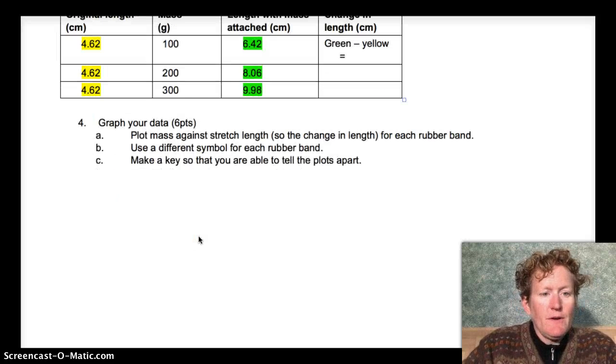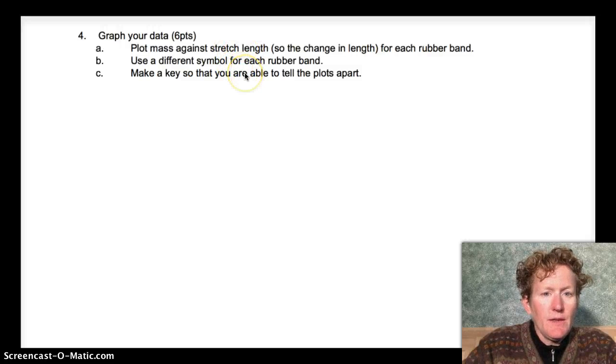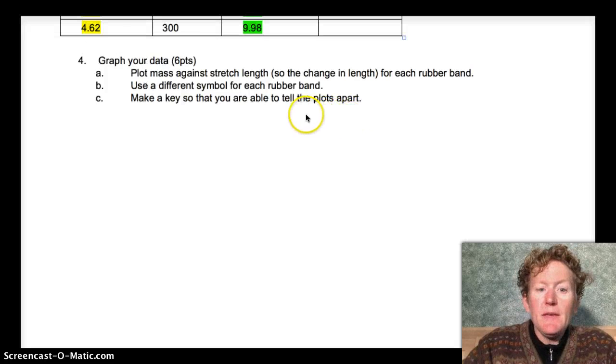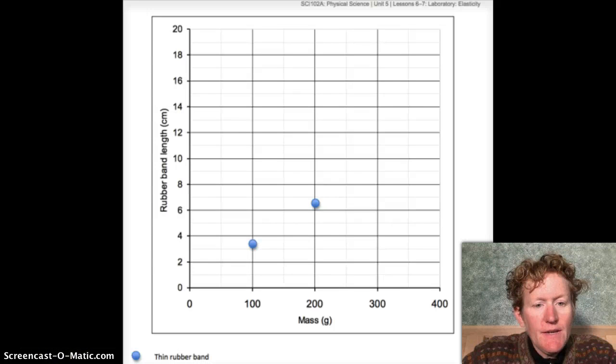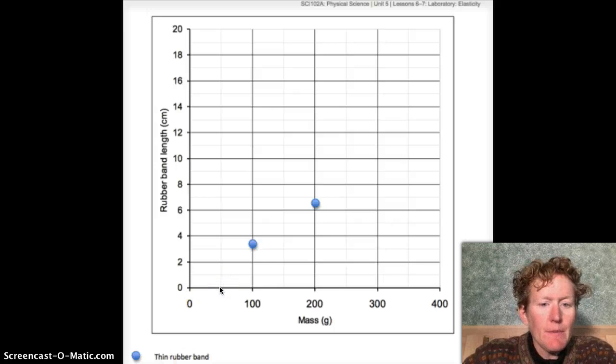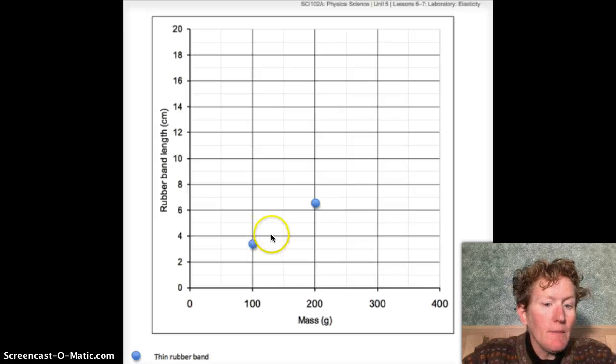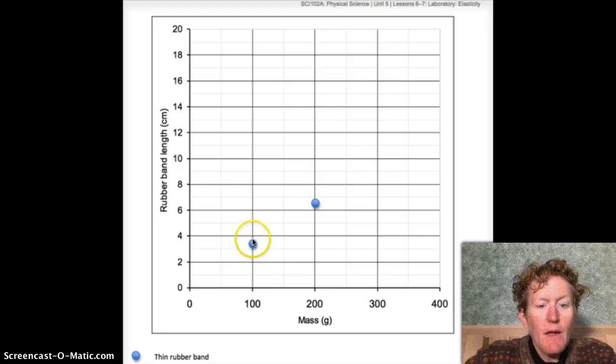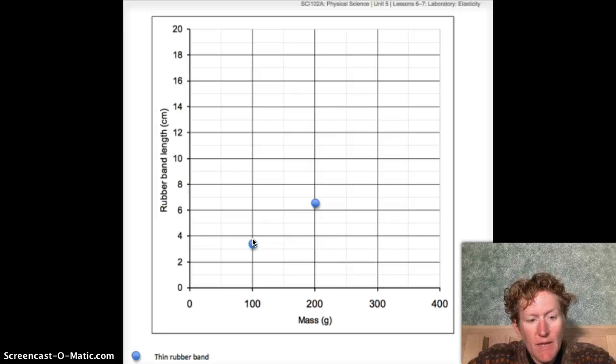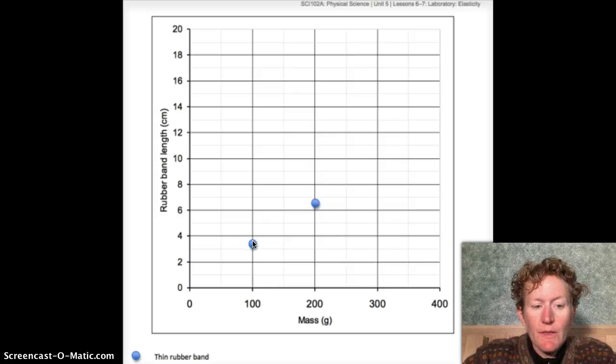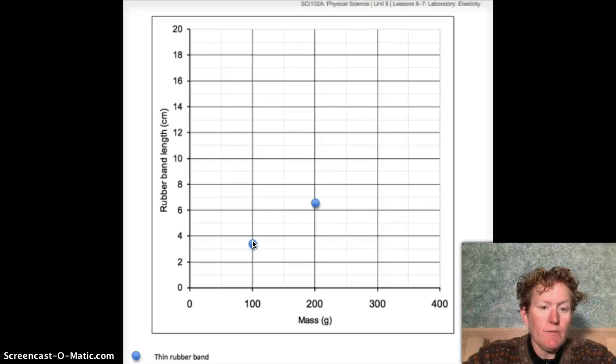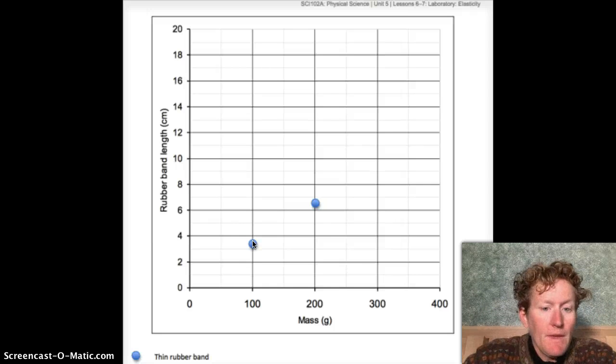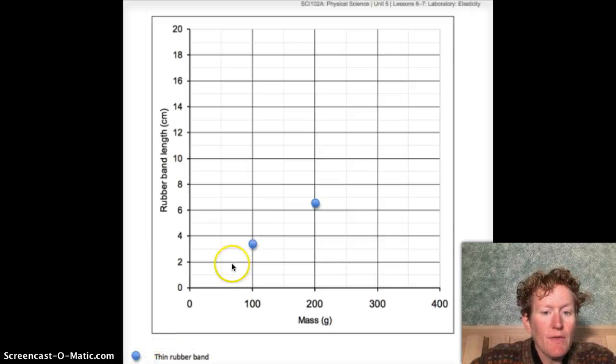Now we need to graph our data. We want to plot mass against stretch length for each of the three rubber bands. We want to use a different symbol for each rubber band and make a key so we can tell the plots apart. When you're done finding the length that the rubber band stretched in the tables above, you can come down to the graph here and start graphing. You can see I've put a couple points on for the thin rubber band. I'm graphing that last column in the table where you took the length of the stretched rubber band and subtracted the original length to find just the amount it got longer.